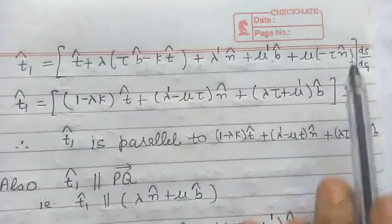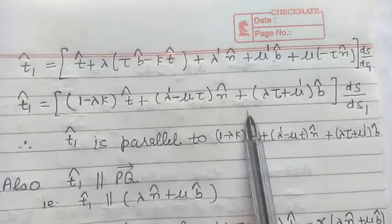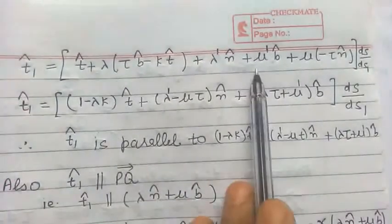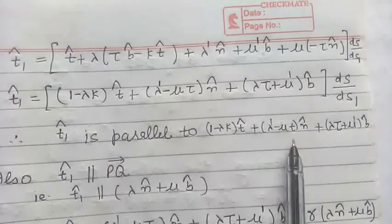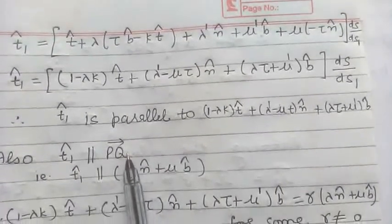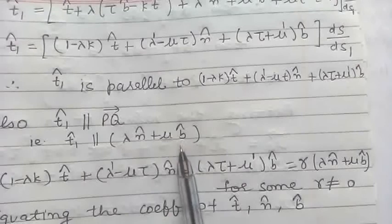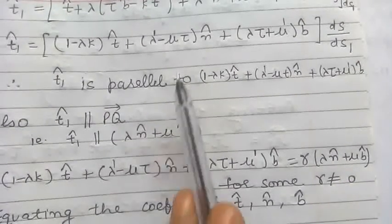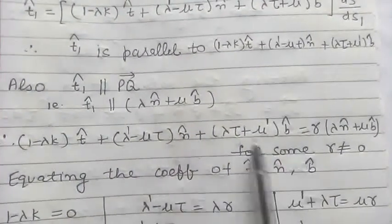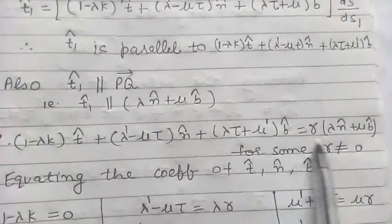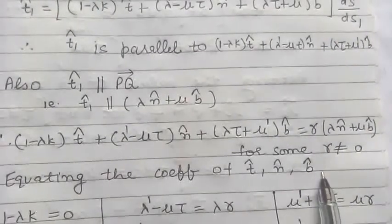Now combining the terms in T cap, N cap, and B cap, we can see that T1 cap is some multiple of this vector, so T1 cap is parallel to this vector. Also from the figure we can say that T1 cap is parallel to the vector PQ, and therefore T1 cap is parallel to the vector λ N cap plus μ B cap. So these two vectors are parallel and hence multiples of each other. We have taken the scalar γ here, and we can equate the coefficients of T cap, N cap, and B cap.